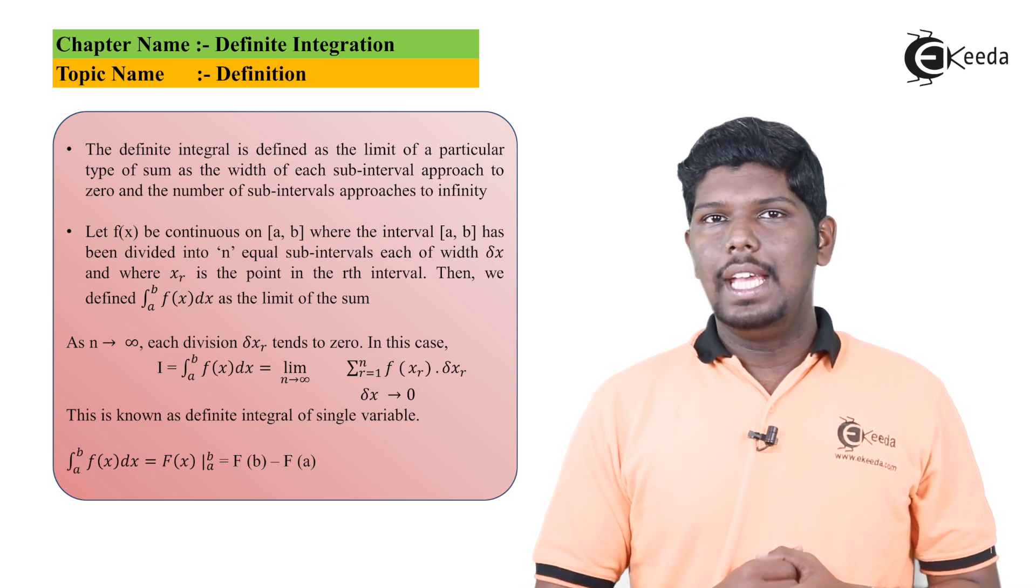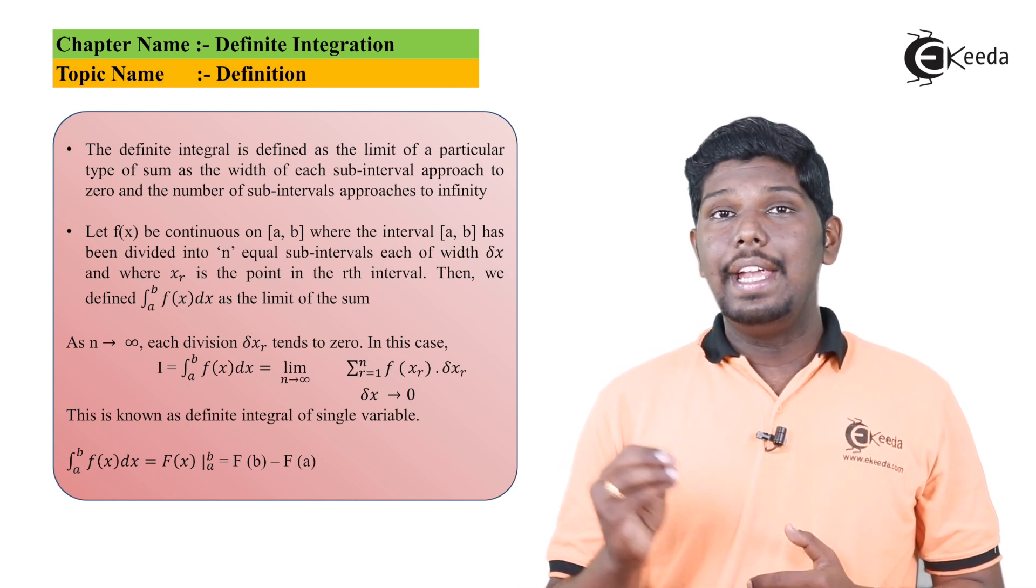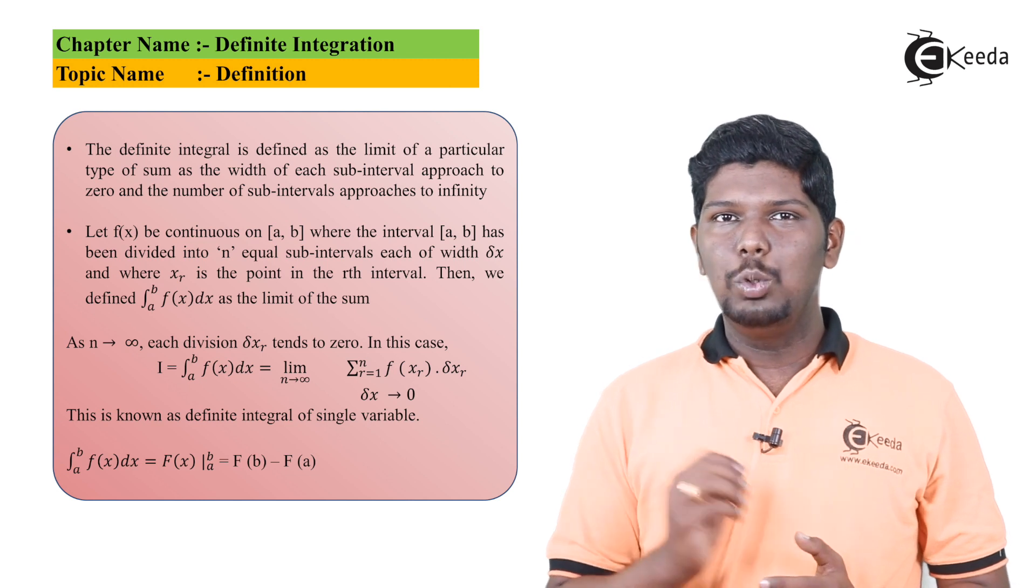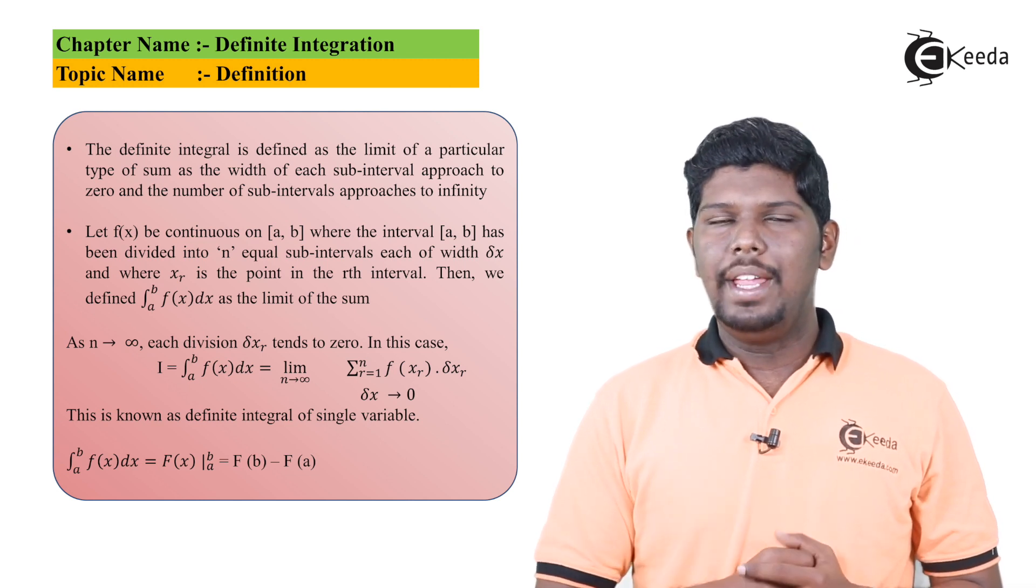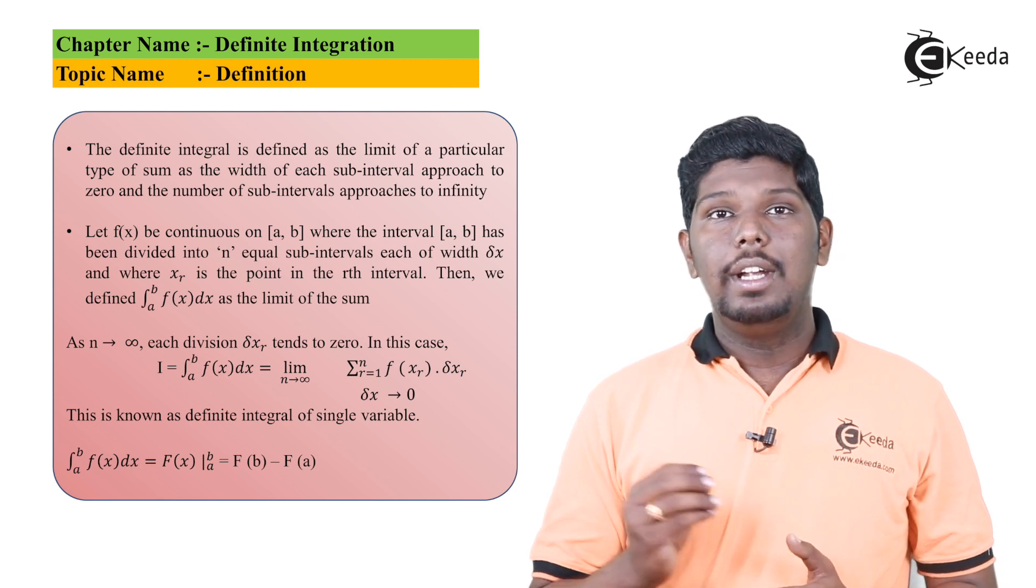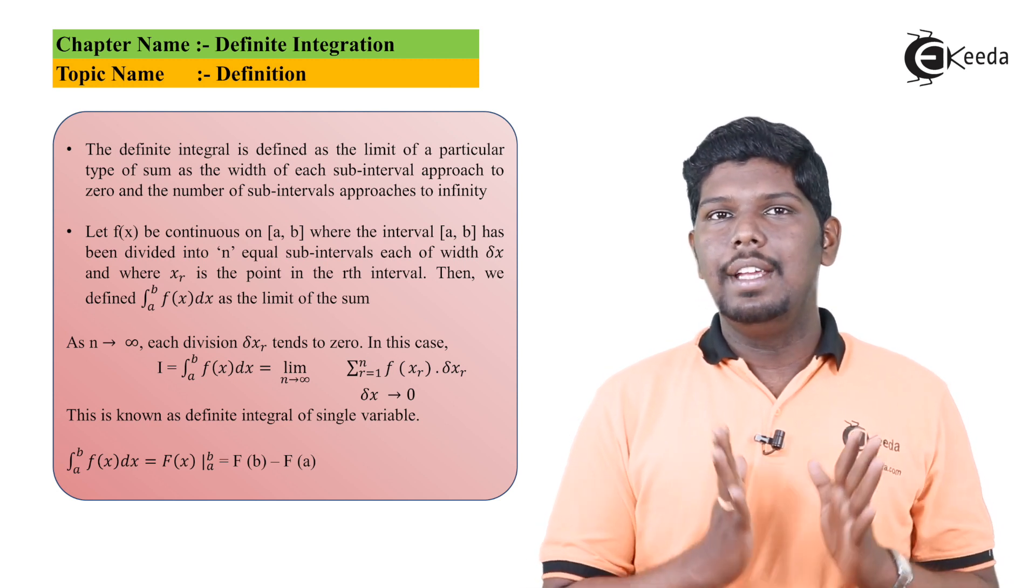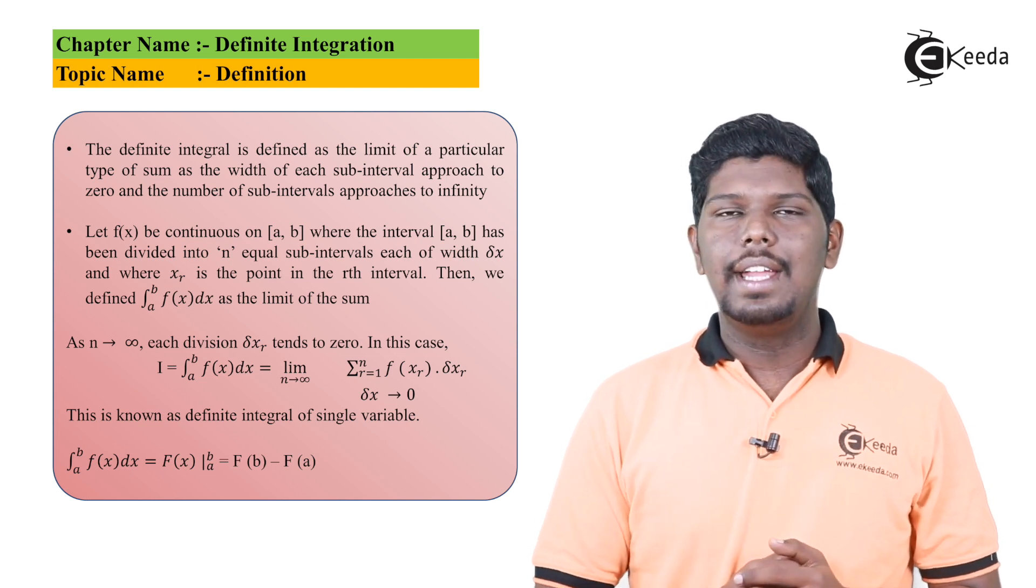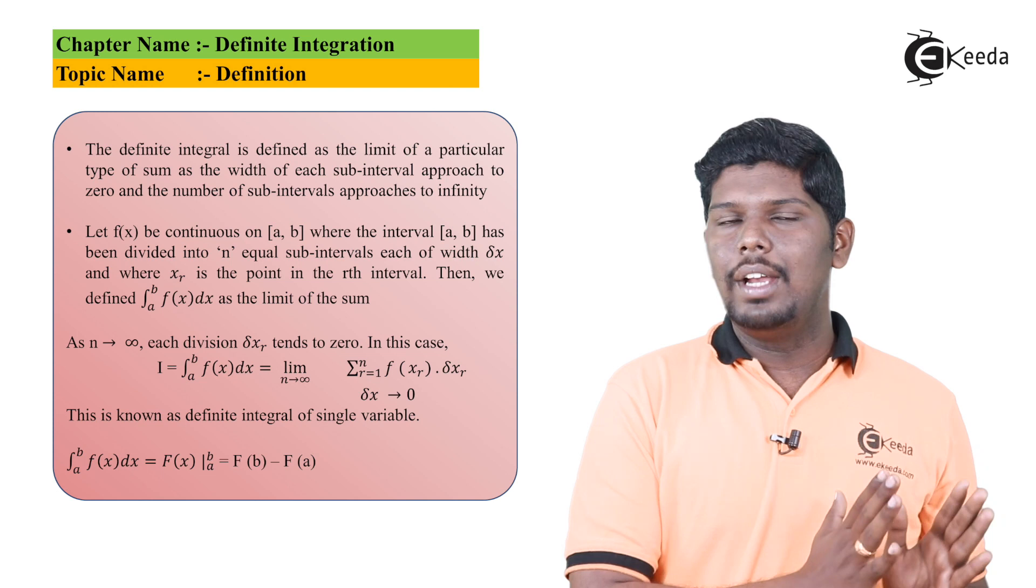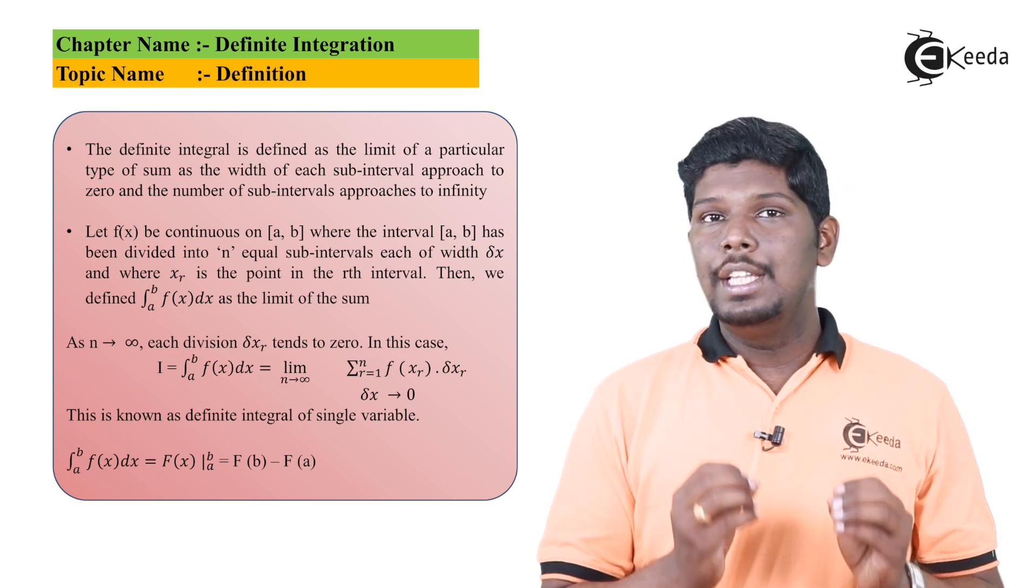So we have integral a to b f of x dx, also written as limit n tending to infinite or del x tending to zero, summation of r is equal to 1 to r is equal to n, f of xr into del xr. So here r is basically representing the number of rectangles or the number of intervals that we have already considered it as n. So the starting value will be 1 while the ending value will be n.